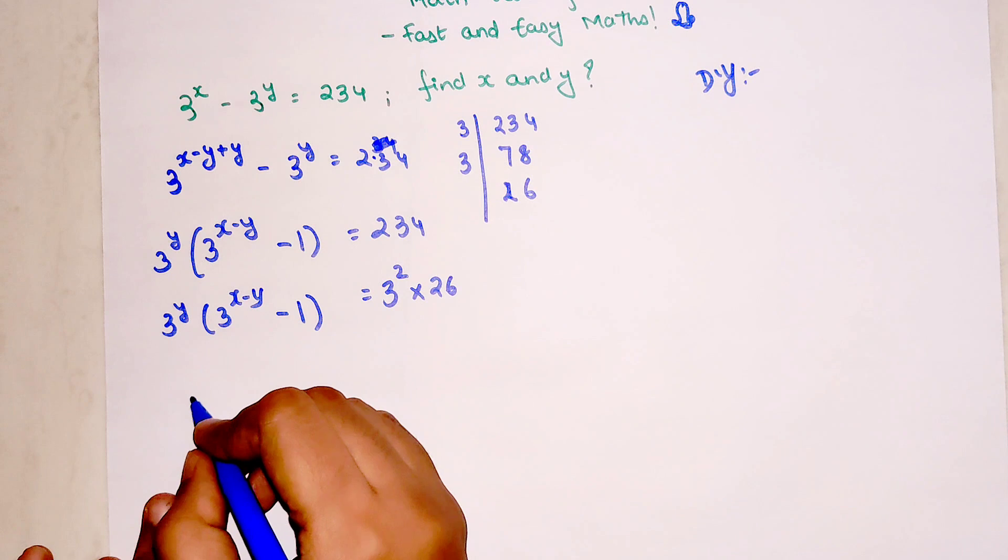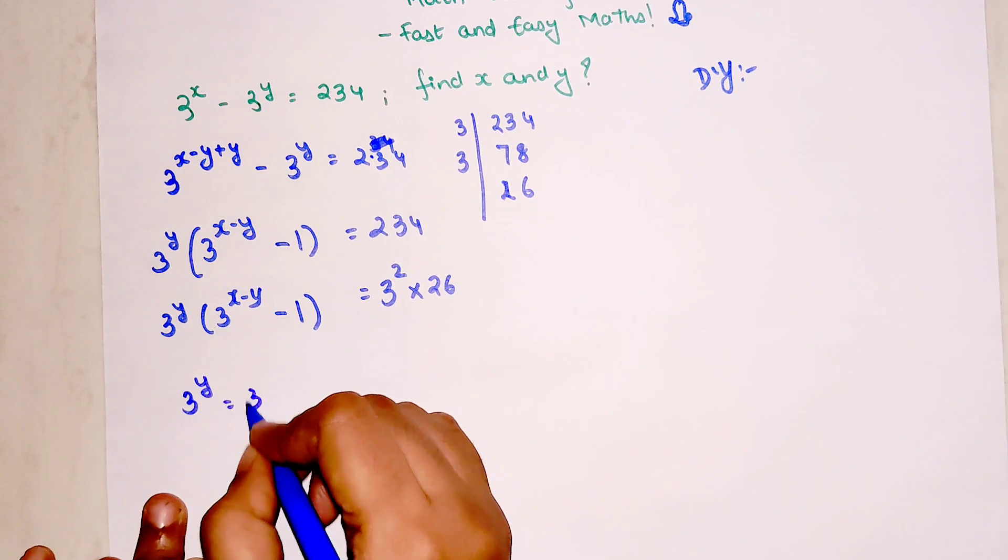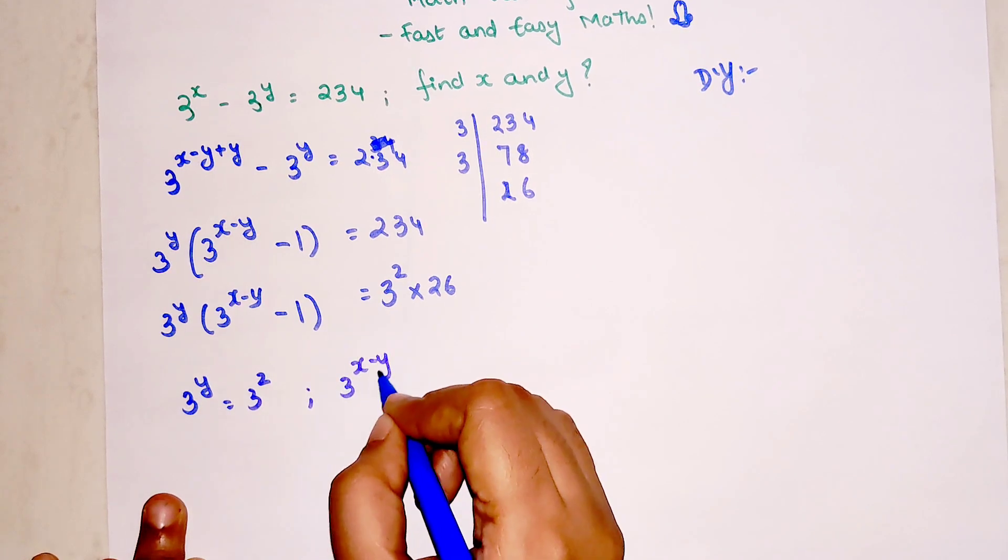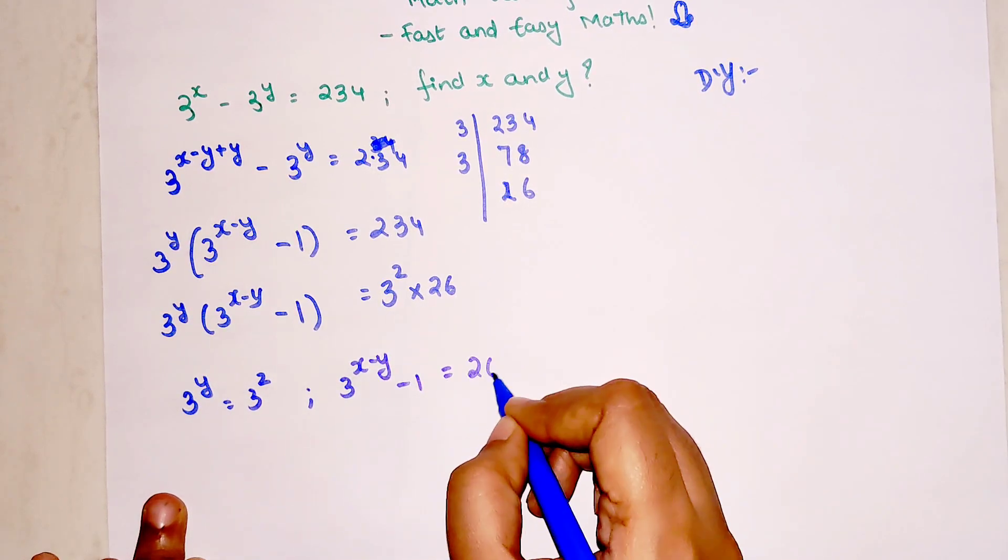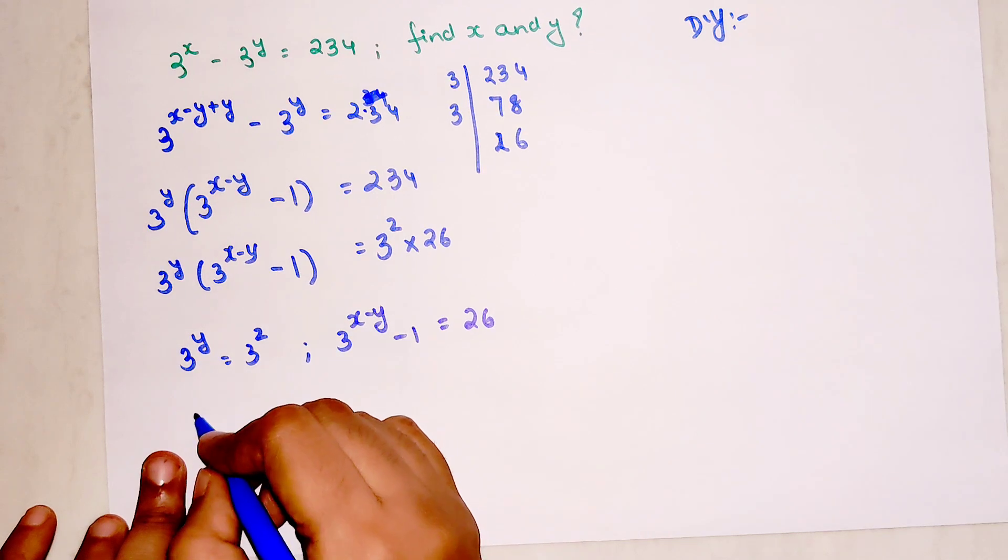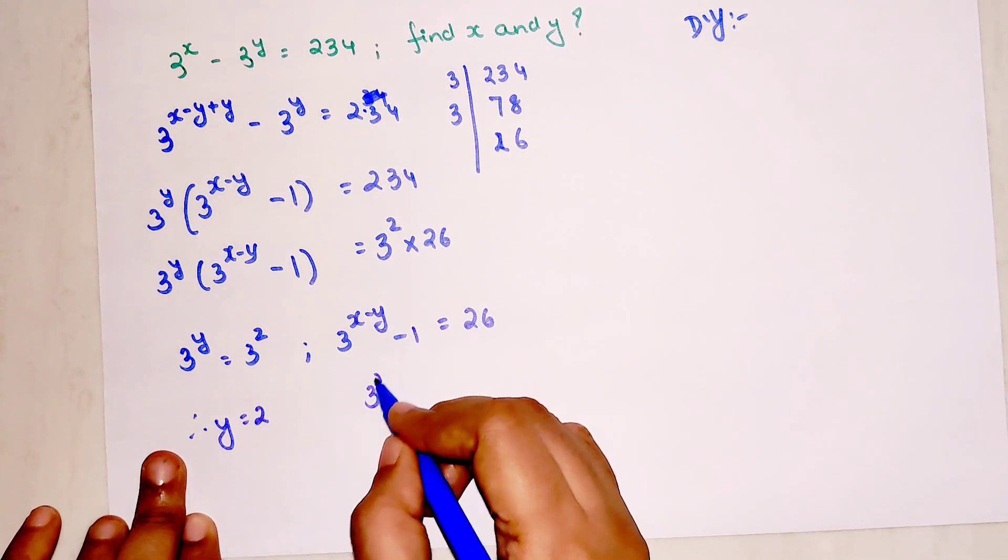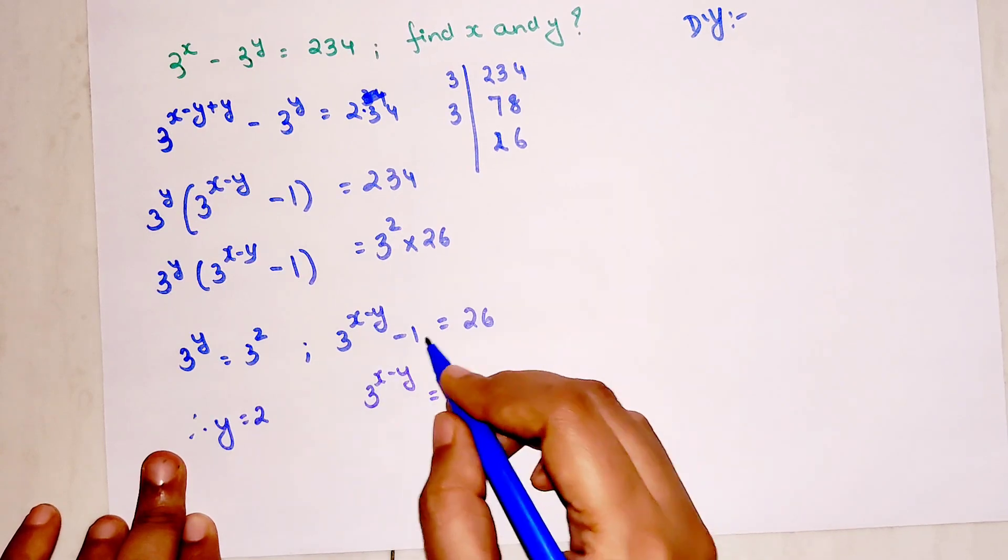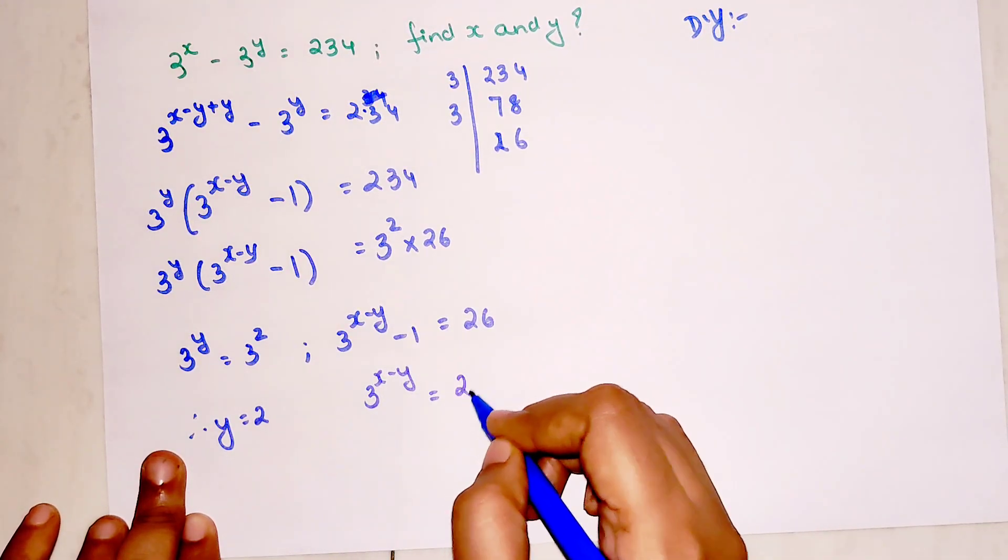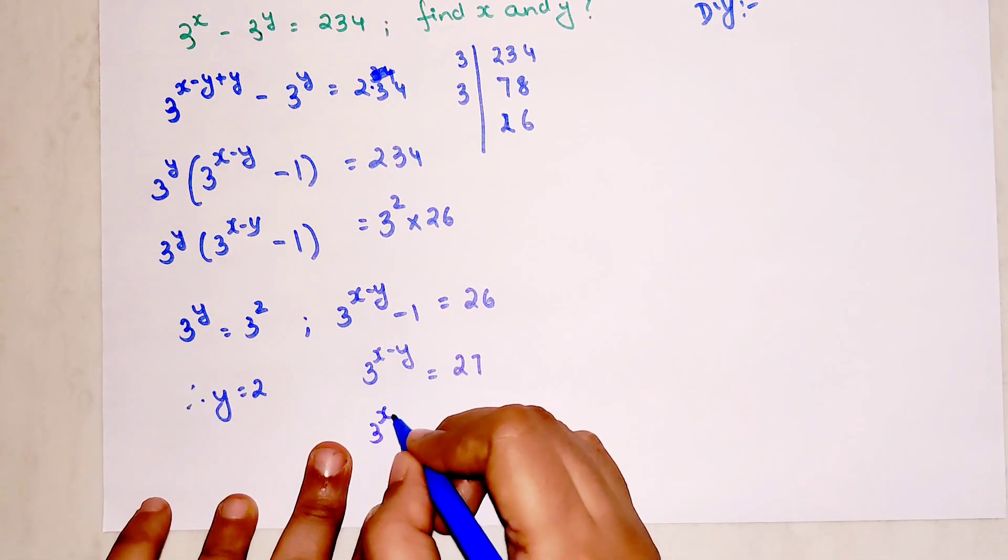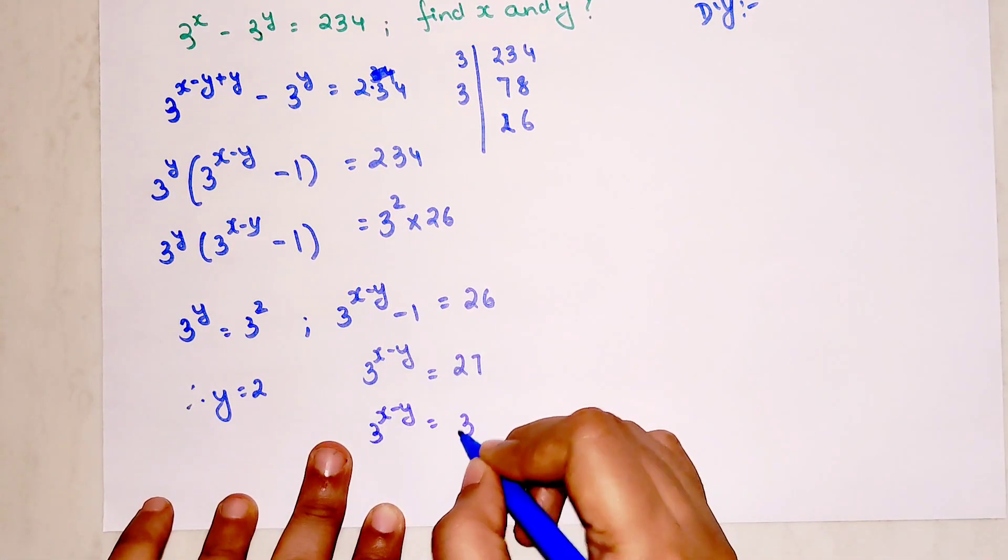Now comparing both sides, I can say 3 raised to y equals 3 squared, and I can also say 3 raised to x minus y minus 1 equals 26. So from here, therefore y equals 2. And here, 3 raised to x minus y equals 27 when the minus 1 shifts to this side.